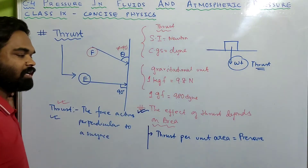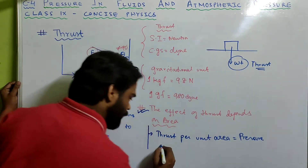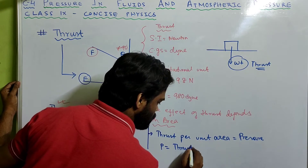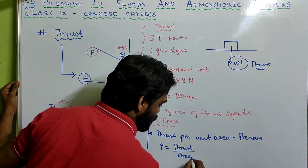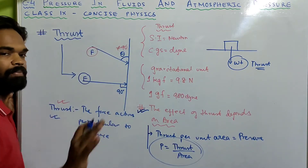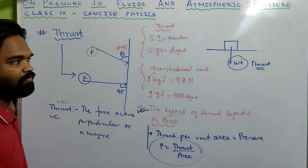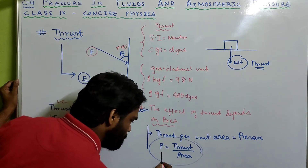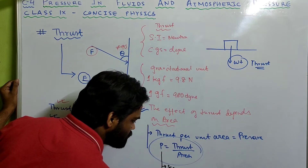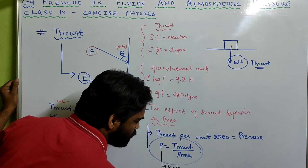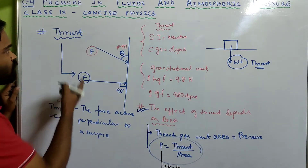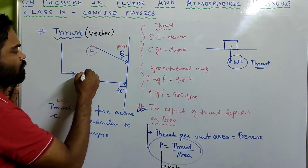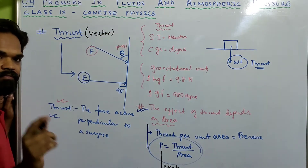Pressure is thrust per unit area — that is the simple definition of pressure. Remember: pressure is a scalar quantity, while thrust is a vector quantity, because force is a vector quantity.